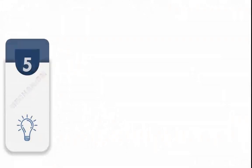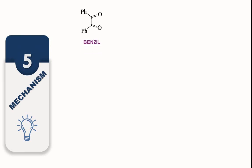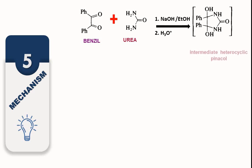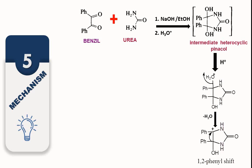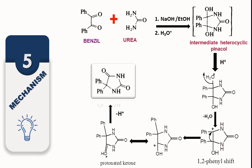Let's see the mechanism. Benzil reacts with urea in presence of NaOH, ethanol, and hydrochloric acid to form the intermediate heterocyclic pinacol. The pinacol rearrangement starts with protonation of the hydroxyl group, which eliminates as a water molecule and forms a carbocation. This carbocation, after 1,2-phenyl shift, forms a stable carbocation which gives the protonated ketone. After abstraction of the proton molecule, it yields phenytoin, also called 5,5-diphenyl hydantoin.